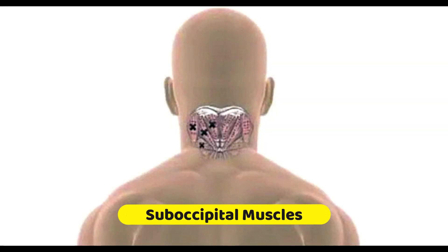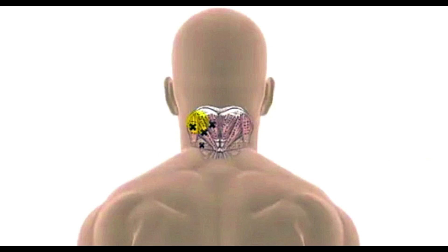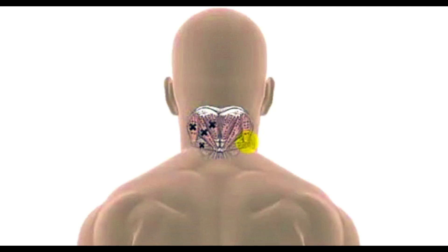The group of muscles we are going to discuss are called the suboccipitals, and this is a descriptive term. The occiput is the base of your skull and 'sub' means underneath, so these muscles live underneath the base of your skull. They are deep muscles and they are a complex group of muscles, as you can see here.